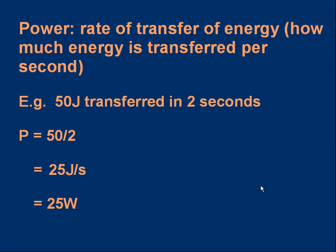Let's remind ourselves what power is. It is the rate of transfer of energy. Rate means how much per second, so that's how much energy is transferred per second. Transferred means change from one form to another. Here's a quick calculation: 50 joules transferred in two seconds, what is the power? It's 50 over 2, 25 joules per second, which we normally write as 25 watts. A watt is the unit, same thing as a joule per second.